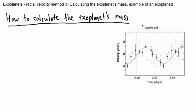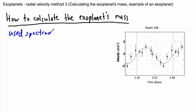In the last video, we were looking at how we can calculate the exoplanet's orbital radius, and we were doing that using this graph right here of velocity versus time. Just to review quickly what we had learned: we used the spectrum of the star, and the spectrum of the star gave us this graph, but it also got us the luminosity of the star and then technically the mass of the star.